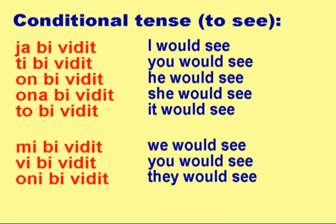Conditional tense — To see: YA BI VIDIT, TI BI VIDIT, ON BI VIDIT, ONA BI VIDIT, TO BI VIDIT, MI BI VIDIT, VI BI VIDIT, ONI BI VIDIT.